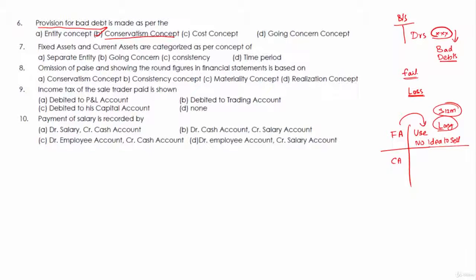Current assets are those which can be converted into cash within a period of 12 months. For example, inventory which you can sell and convert to cash within 12 months, or debtors where you have already sold and can collect cash within 12 months. So fixed assets are those that help you run the business for more than 12 months, whereas current assets are those convertible into cash within 12 months. The focus is on time period, so fixed assets and current assets are categorized as per the concept of time period.